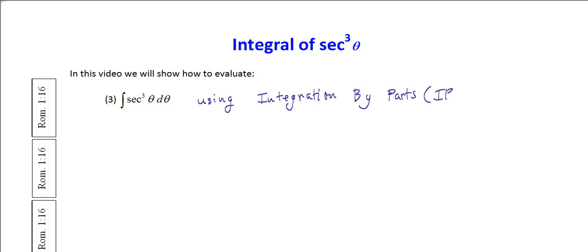If you needed a refresher on integration by parts and how it was derived, I also produced a video on that so you can check that out. Just to give the formula: I urged everyone to memorize that the integral of u dv is equal to u times v minus the integral of v times du.